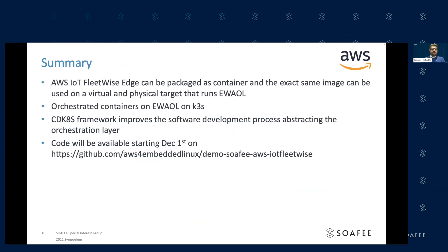In summary, we went through this example showing how to run a container connecting to a CAN bus in both a virtual and a physical target running on eWALL. We have seen how to orchestrate this container with K3S, the orchestrator of choice for eWALL. We also looked at CDKates as a way to improve the software development process by abstracting the orchestration layer. All the code developed for this example will be available on GitHub at this address starting from December 1st, and I'm very welcome to answer any questions you may have.